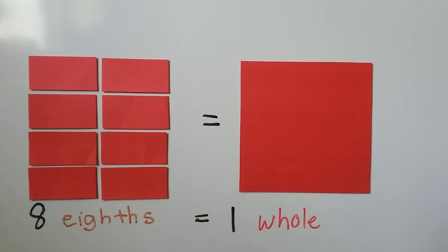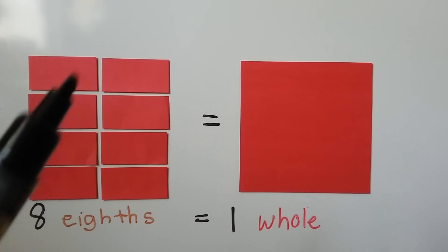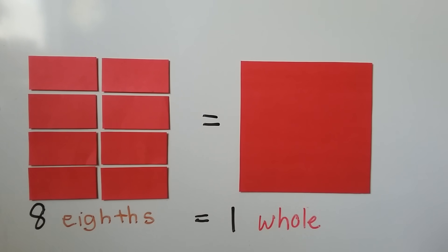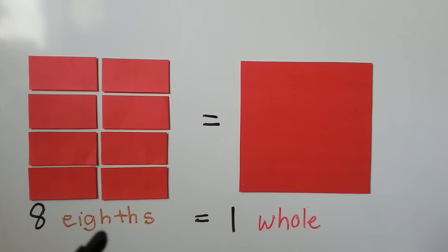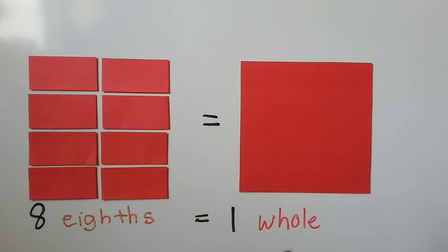Now our red square is cut into eight equal parts. Each part is an eighth. We have one, two, three, four, five, six, seven, eight equal parts. Each one is an eighth, so we have eight eighths. And eight eighths all together is equal to one whole red square.